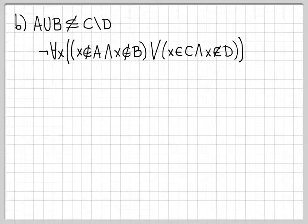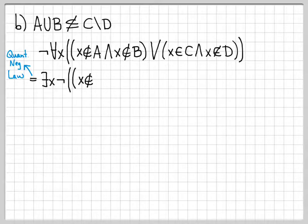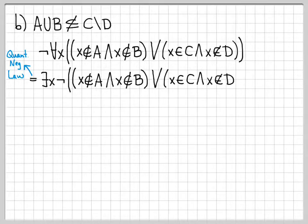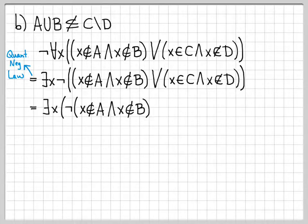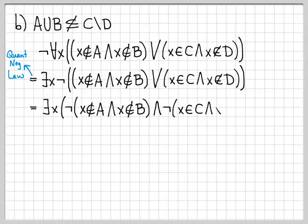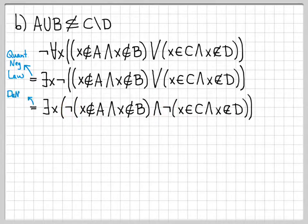Let's work on this. The next thing we do is use the quantifier negation law: instead of not for all x, I write there exists an x not, and leave the rest alone — that's what the quantifier negation law gives us. Next, I apply DeMorgan's and distribute the not across everything: I change the or to an and, and put a not on each side, flipping the middle symbol. So I not both parts and flip the or to an and.